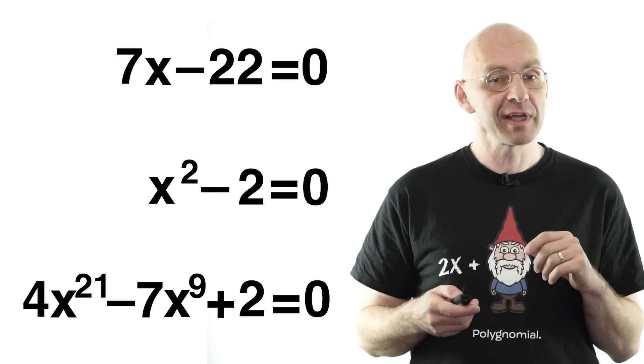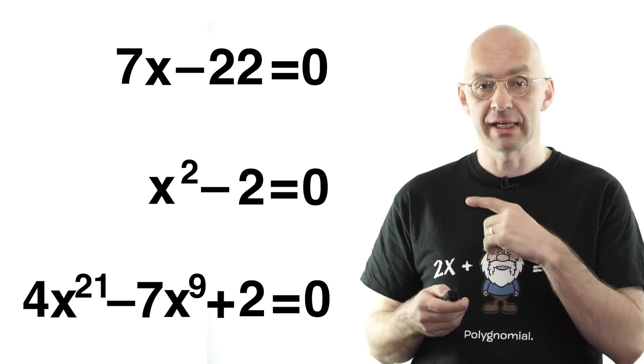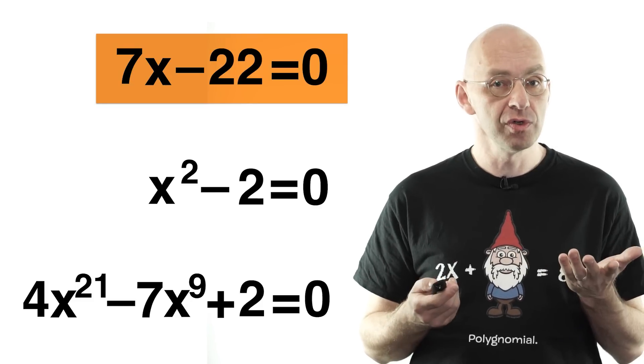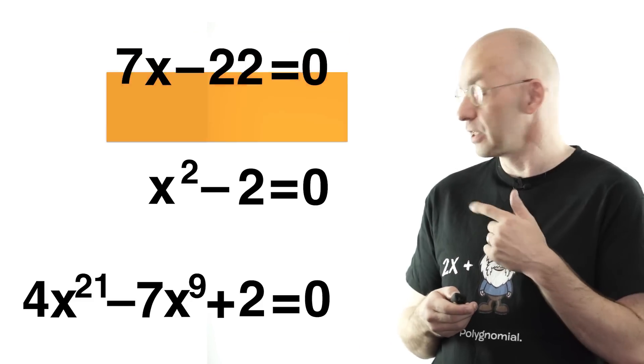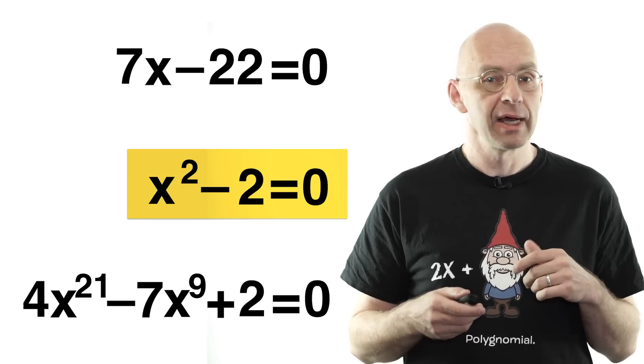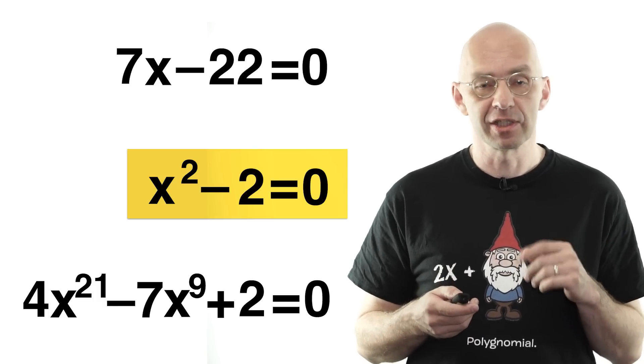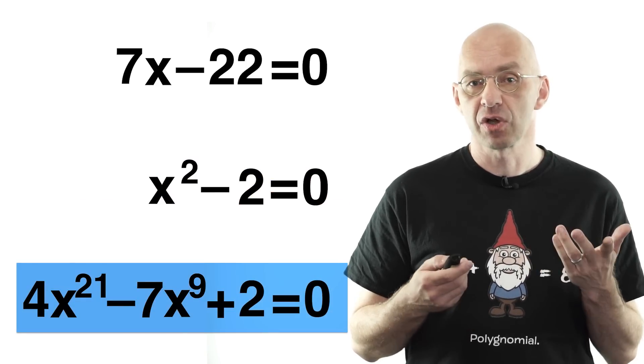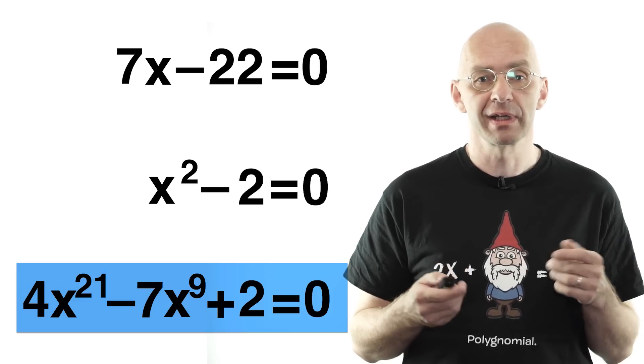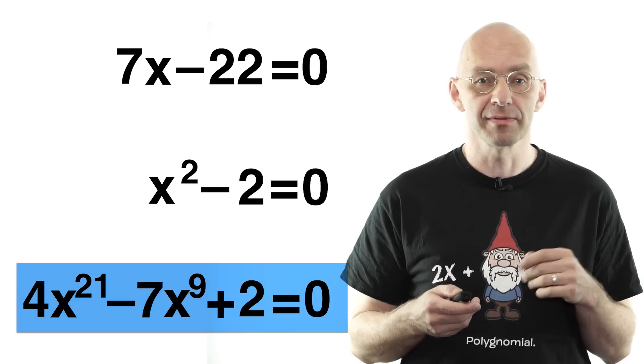For example, the fraction 22 over 7 is the solution to this linear equation there, and root 2 is one of the two solutions of this quadratic equation. I just randomly picked the polynomial equation at the bottom there. It's got one real solution which is approximately minus 1.061 and so on.